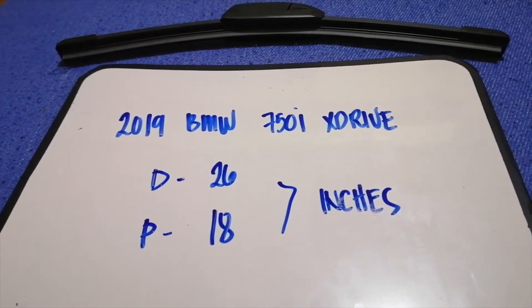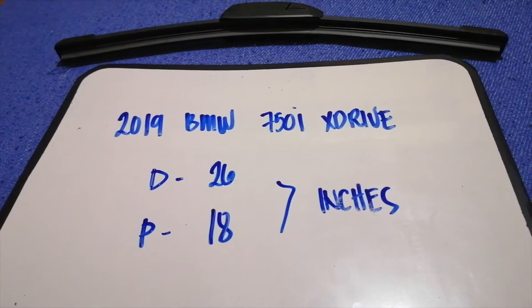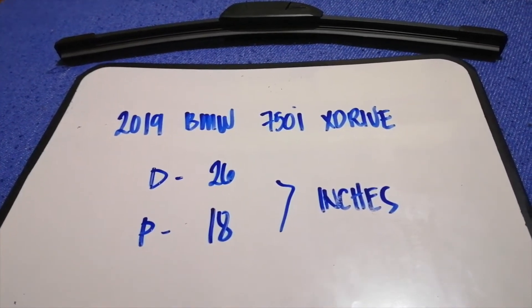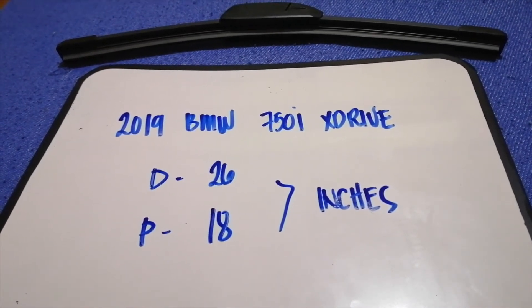Just check the video description and I will try to leave the info there as well. The wiper blade replacement size for the 2019 BMW 750i X-Drive is 26 inches for the driver and 18 inches for the passenger.